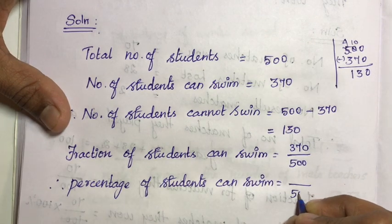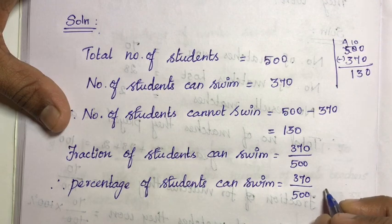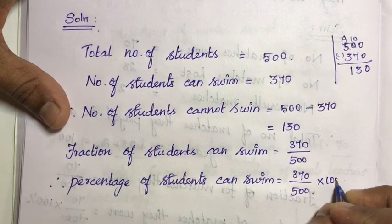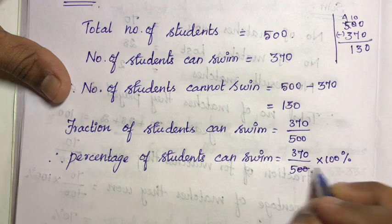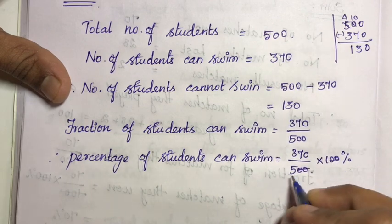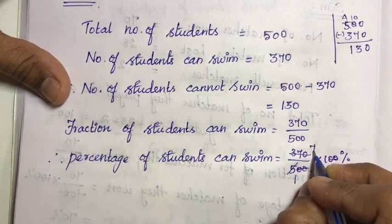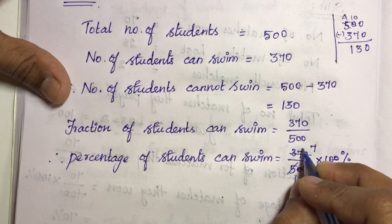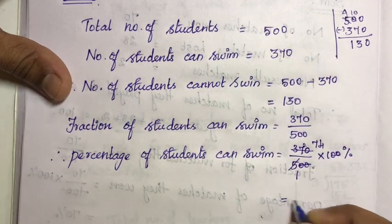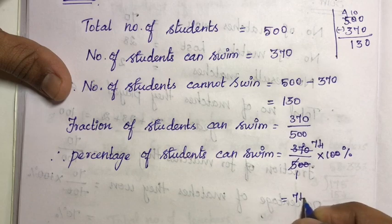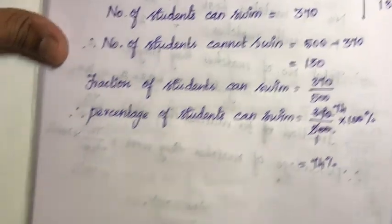Total is 500, of which 370 students can swim. So the percentage of students who can swim is equal to 370/500 multiplied by 100. Cancel the zeros, then cancel by 5: 5 into 5 is 5, 5 into 35 is 35 remainder 20, 5 into 20 is 4. That is equal to 74 percentage. So 74 percentage of students can swim.